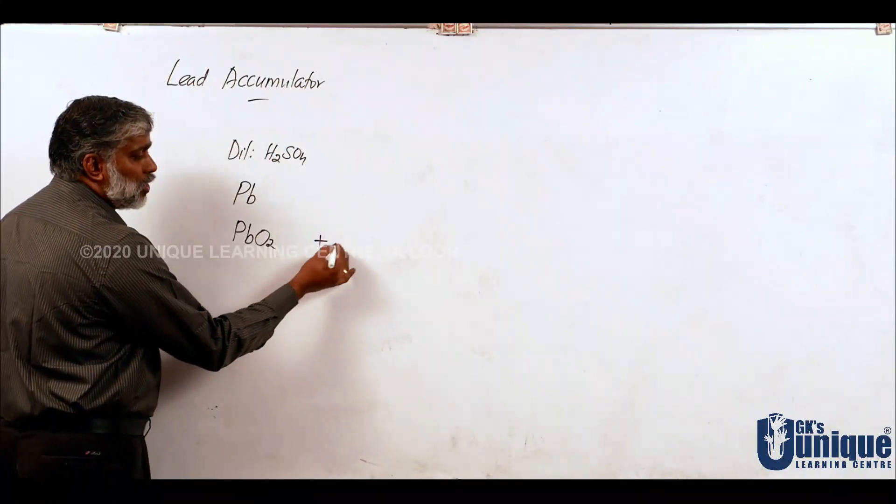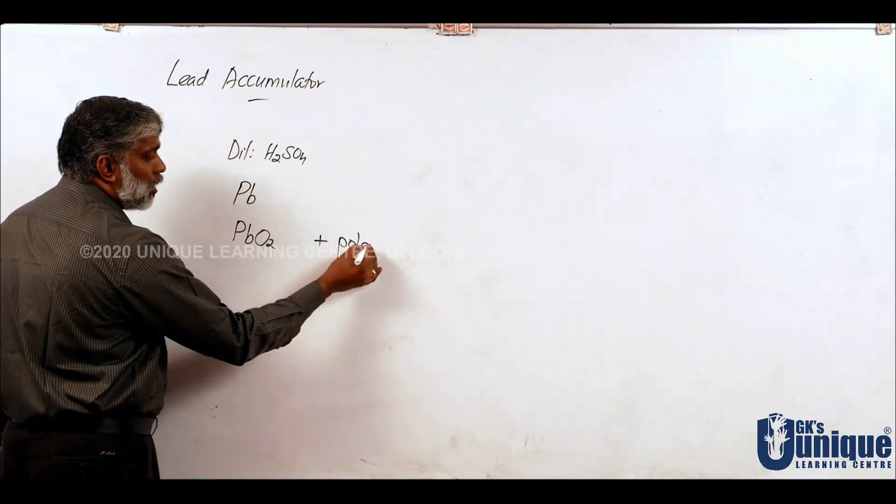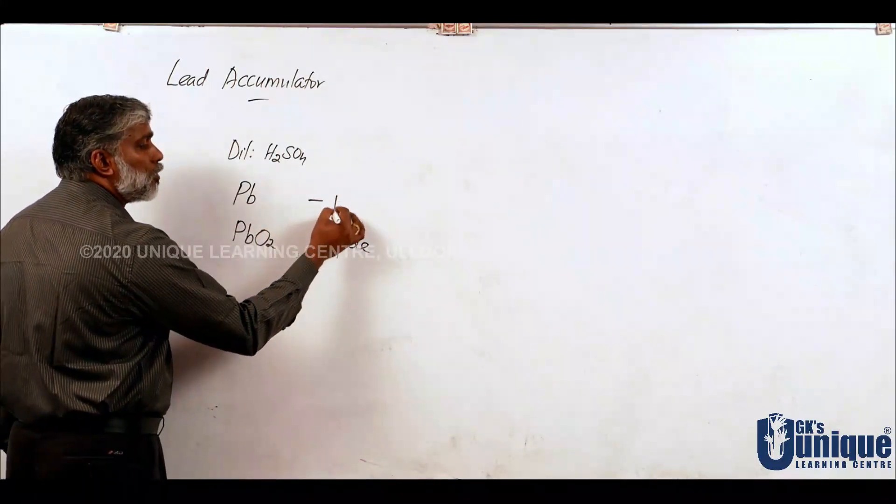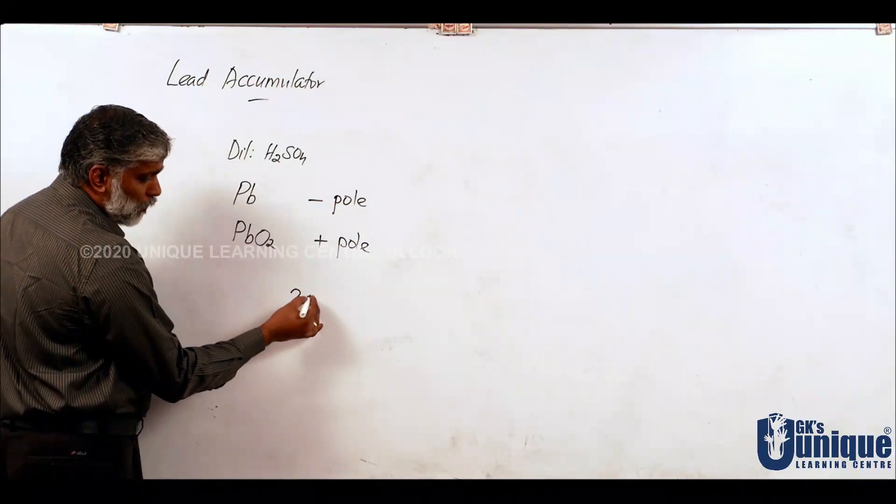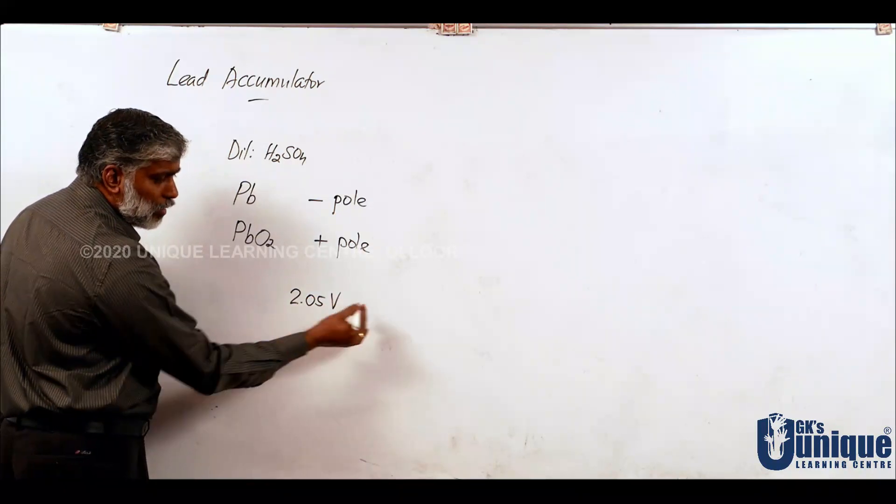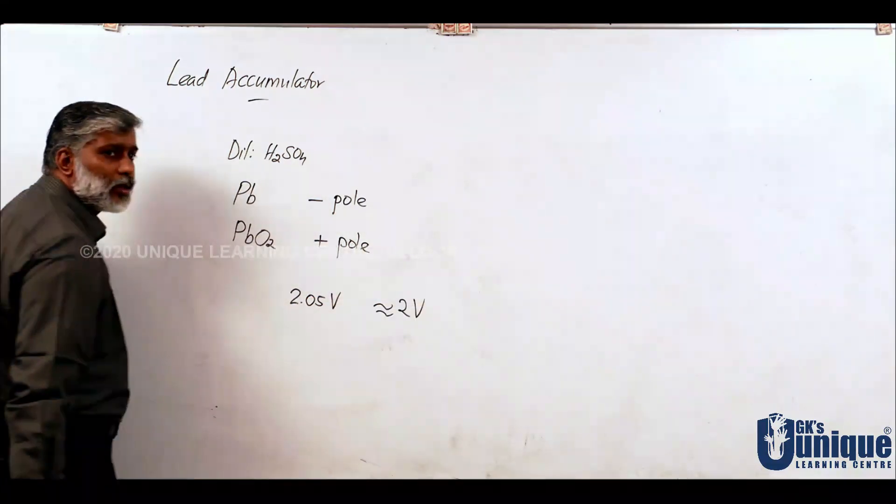Lead Dioxide is the positive pole, Lead is the negative pole. EMF around 2.05V, approximately 2V.